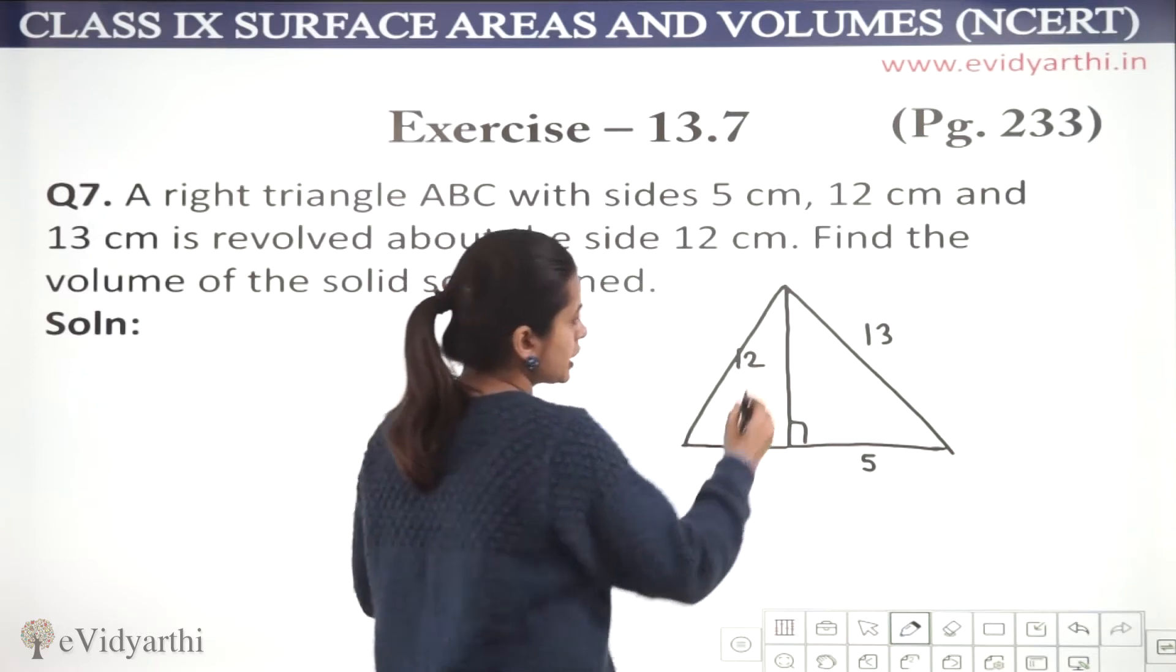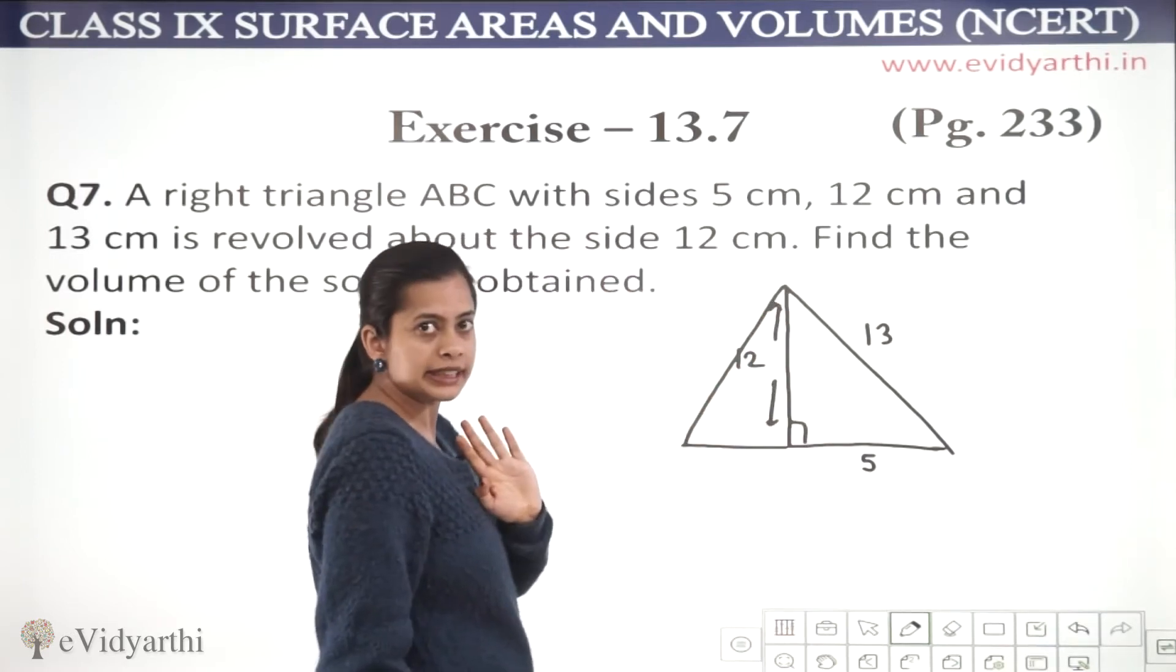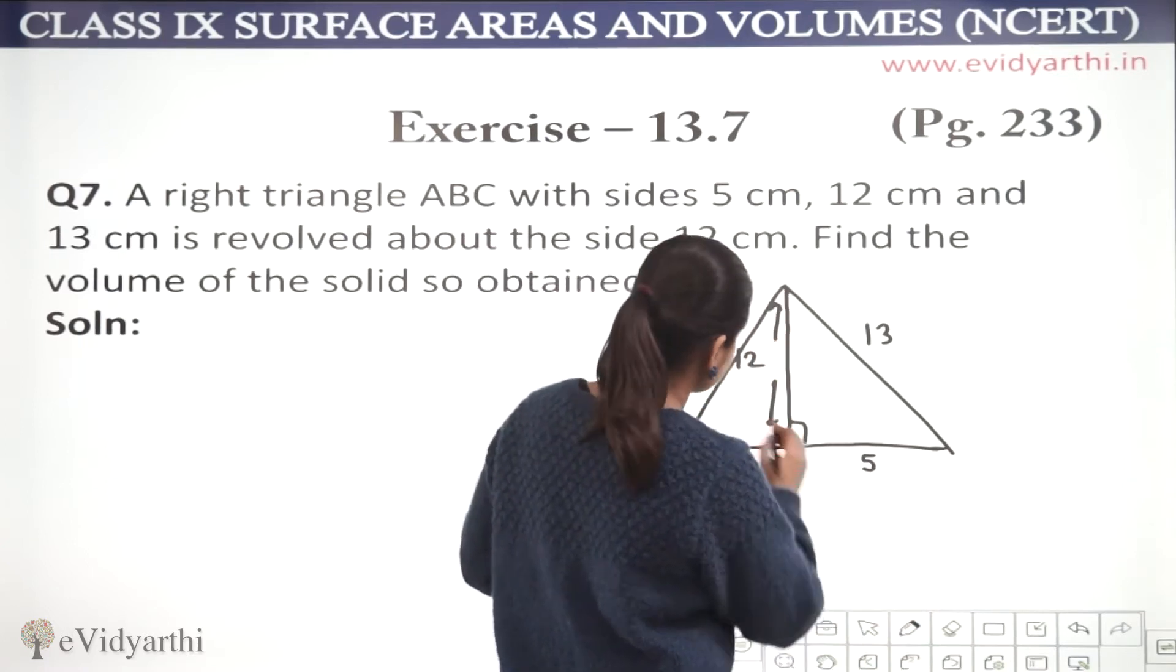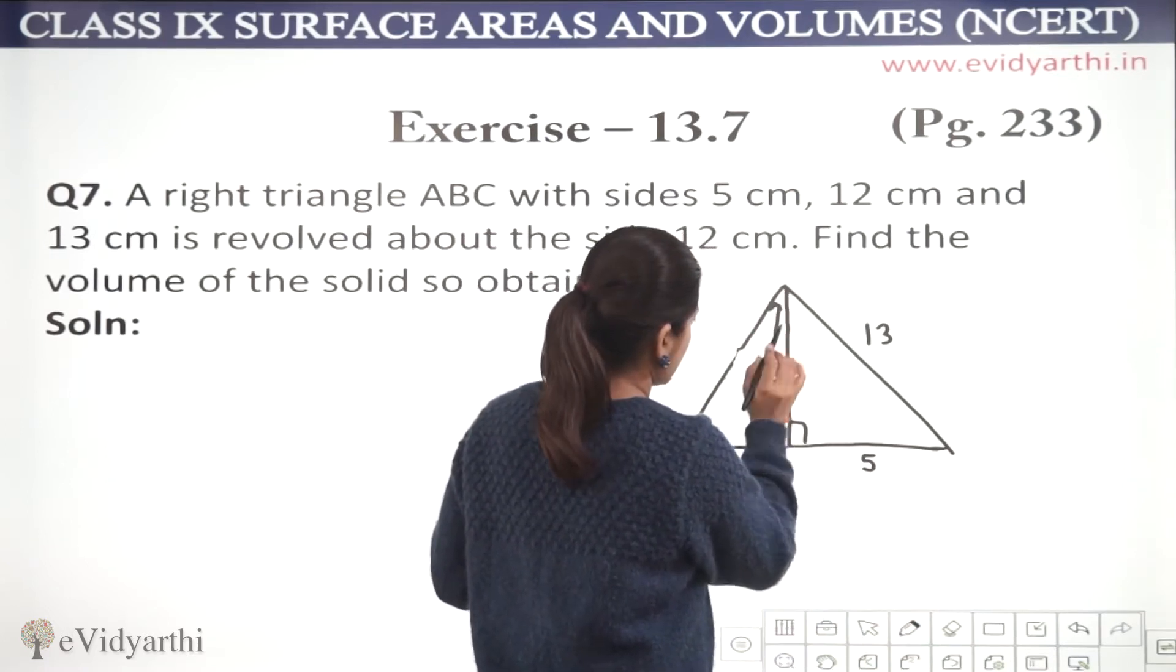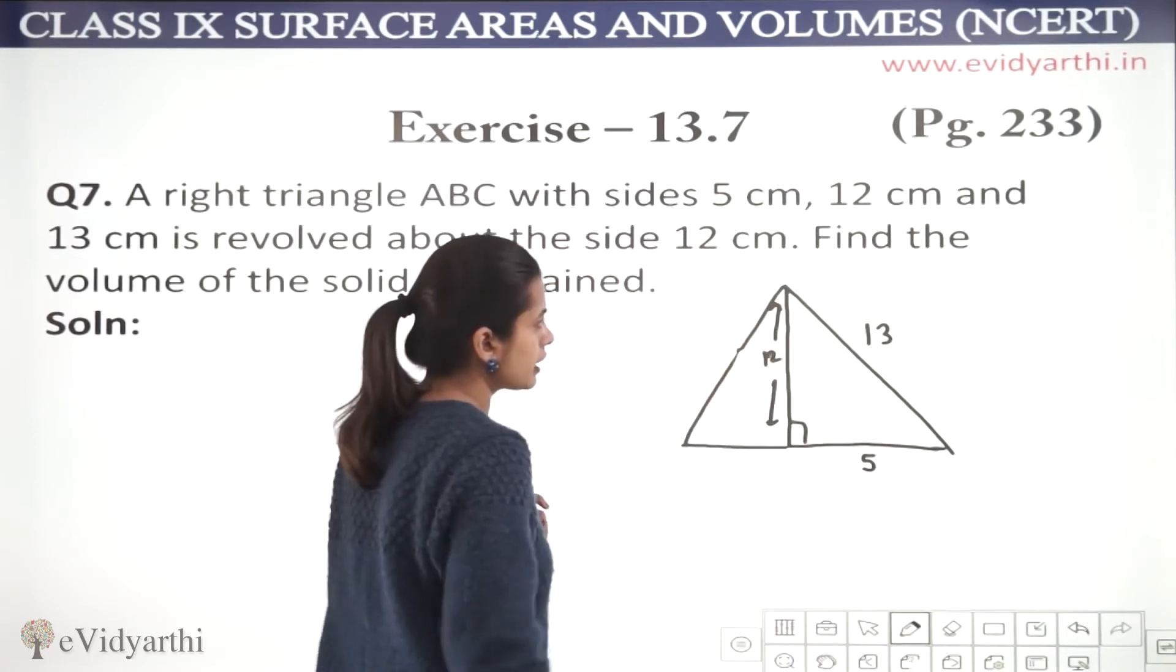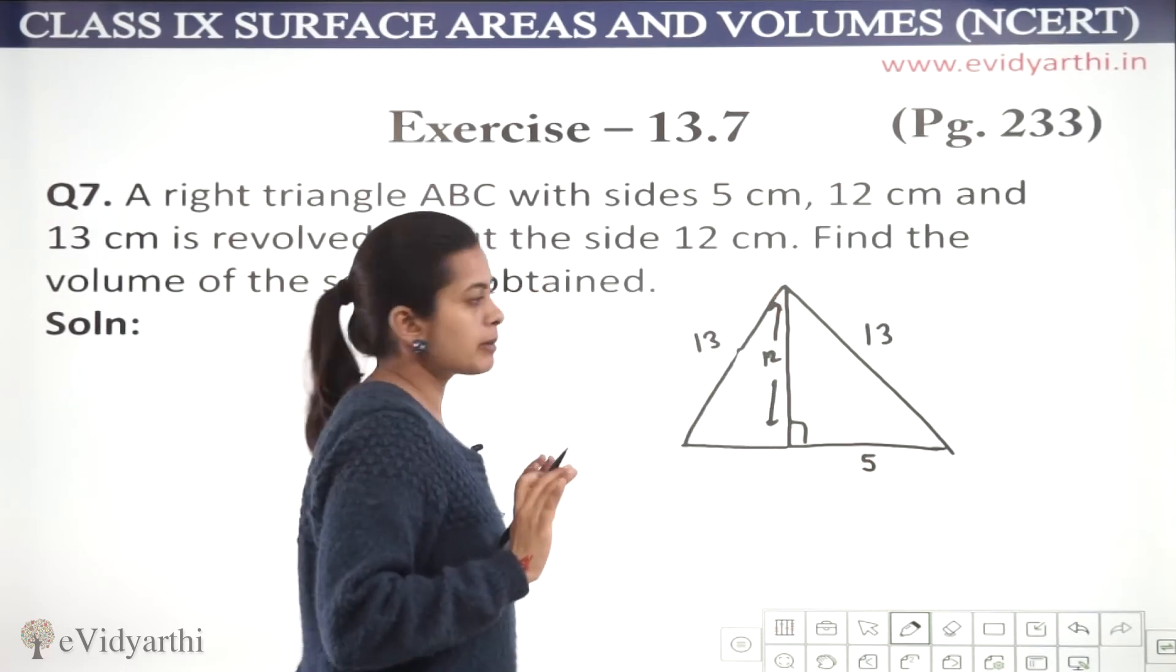Again, if we look at this dimension, this is our perpendicular. This will remain the same, 12 cm. Right? But, if I am here, let's say, this is our 12. So, this is our total, this is 12 cm.